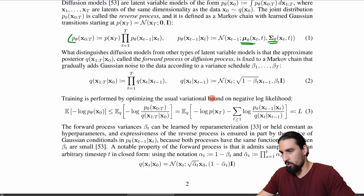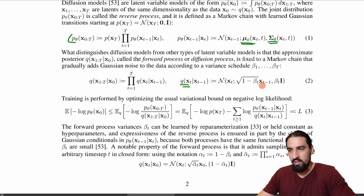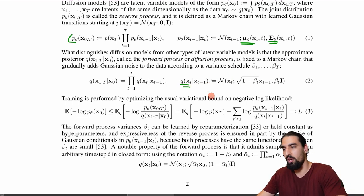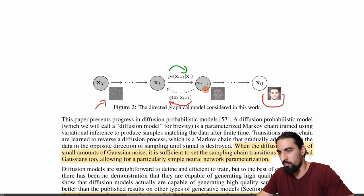Here is the actual forward process — you can see how we sample from it. Basically, you downscale the current image to form the mean, and then you sample from this Gaussian to end up with x_t. So we condition on x_{t-1}, and by sampling from this distribution, we end up with x_t. That's basically going from one step to the next.